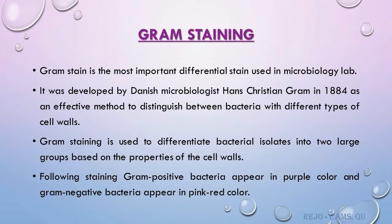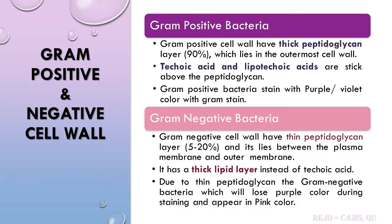The main difference between gram positive and gram negative cell walls is that gram positive bacteria have a thick peptidoglycan layer, and teichoic acid and lipoteichoic acid are attached above the peptidoglycan. Gram negative bacteria have a thin peptidoglycan layer and a thick lipid layer instead of teichoic acid. Due to the thin peptidoglycan, gram negative bacteria lose purple color during staining and appear pink.